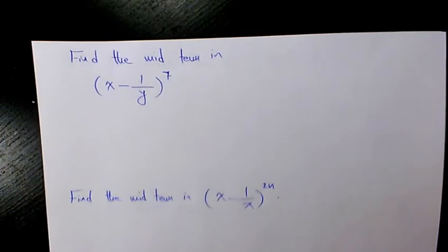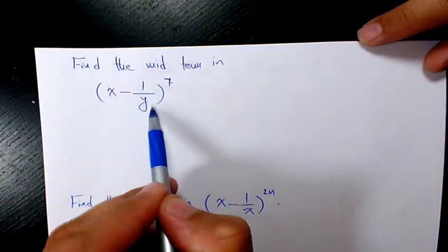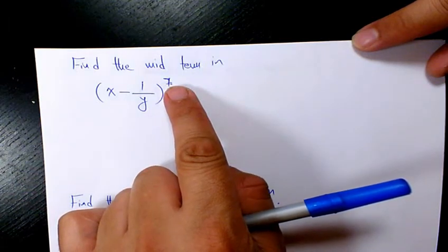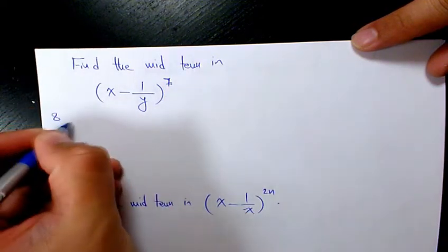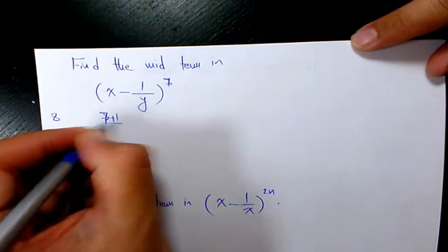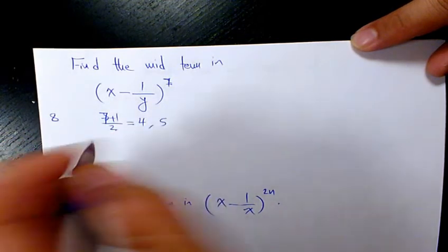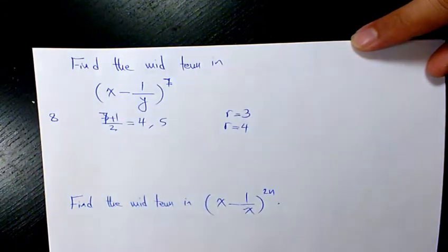The next example says: find the middle terms in (x − 1/y) to the power of 7. Here n = 7, which is an odd number, so the total number of terms is 8. We have two middle terms. Using (n+1)/2 = 8/2 = 4 and 5, these are the 4th and 5th terms, so r = 3 and r = 4.